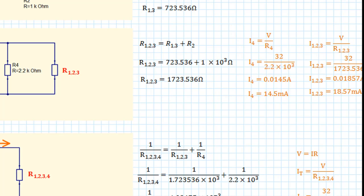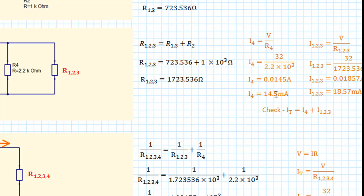At this stage, just to make sure we've made no mistakes, we can do a quick check. We know that the current flowing through the circuit will split, with I4 going one way and I123 the other. So the total current should equal I4 plus I123. Adding 14.5 plus 18.57 milliamps we should get approximately 33.11 milliamps — which we do, so that's good.